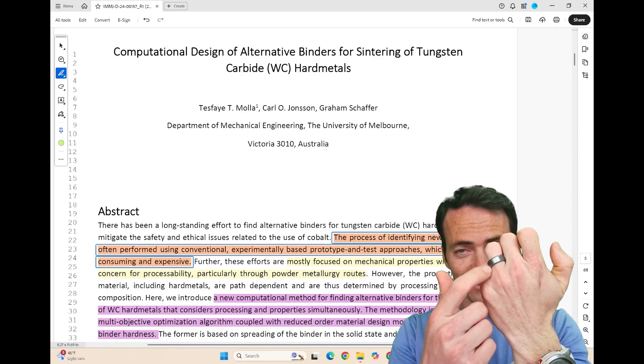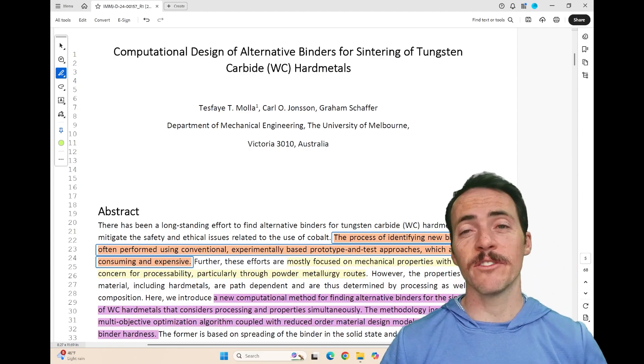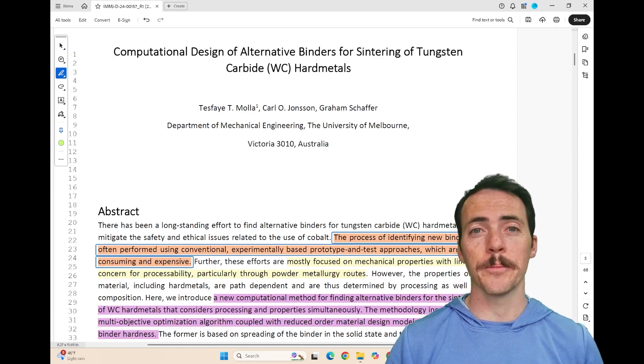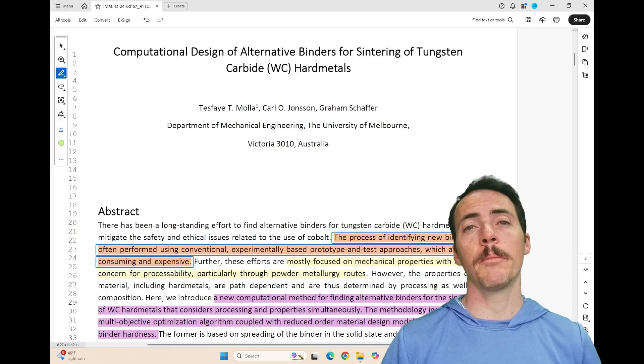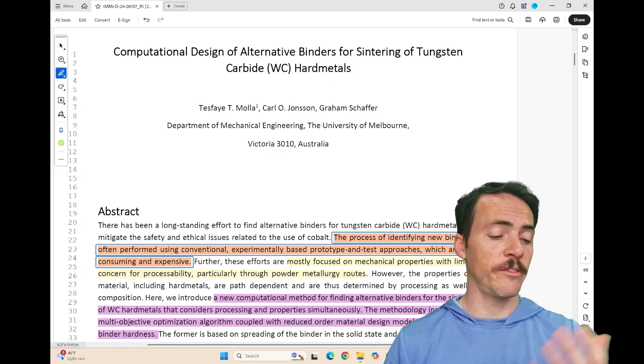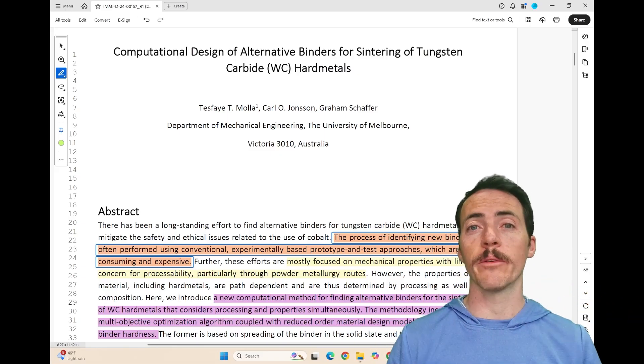Materials like tungsten carbide, right here, they're used for lots of applications, cutting tools for example, but they predominantly rely on cobalt. In fact, I remember when I bought this, it was a cobalt bonded tungsten carbide ring.